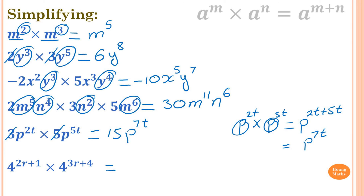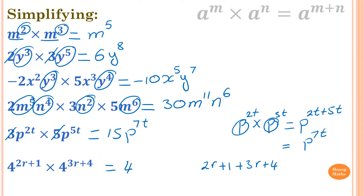Last one: 4 to the power of 2r plus 1 times 4 to the power of 3r plus 4. The base is 4 for both, so we just add the indices: 2r plus 1 plus 3r plus 4. Simplifying: 2r plus 3r is 5r, and 1 plus 4 is 5, so the index is 5r plus 5. The answer is 4 to the power of 5r plus 5. Thank you so much for watching.